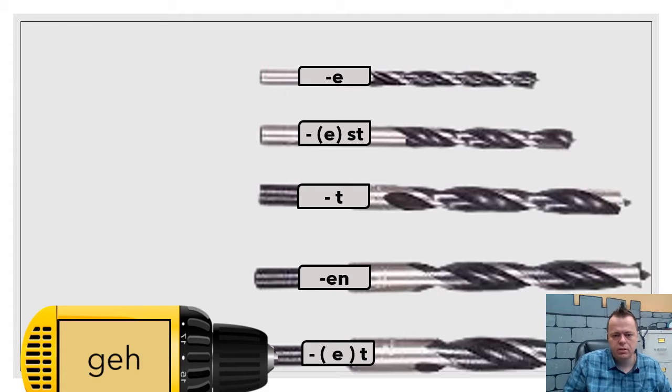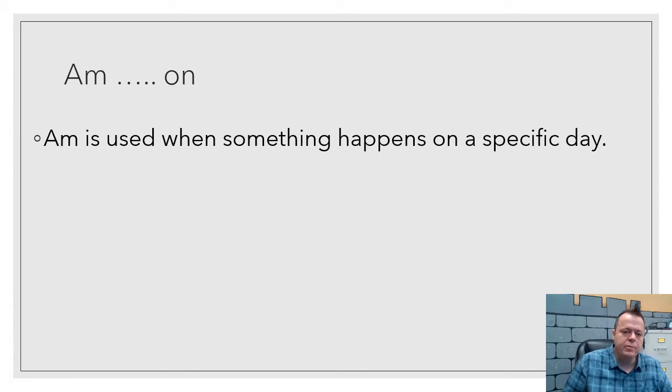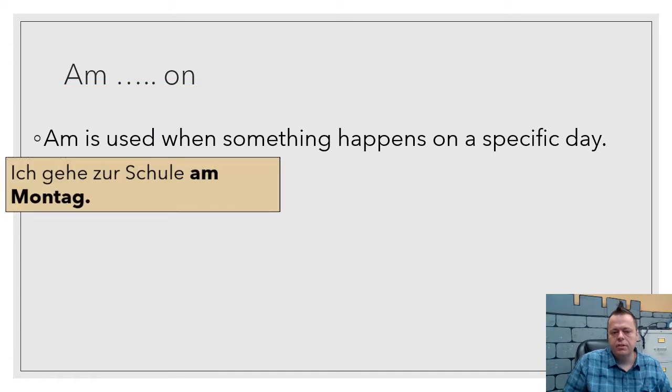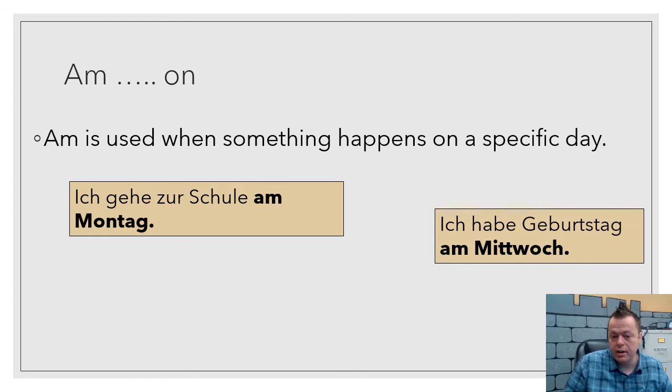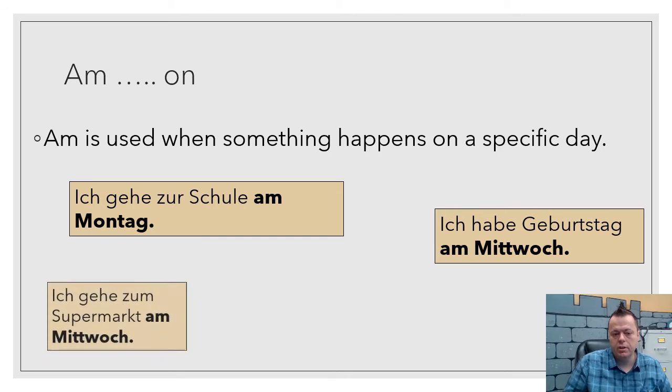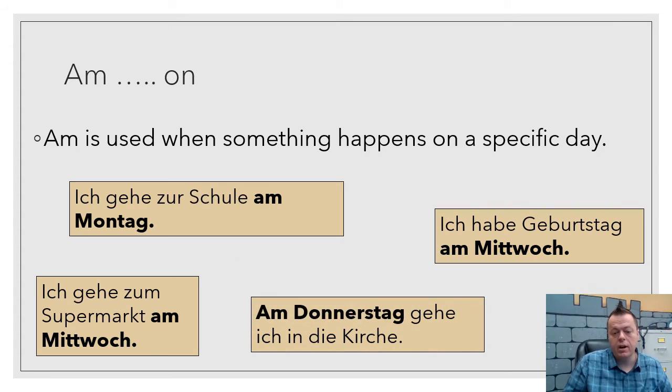Alright, we're going to talk about am, bis, and um. So am is used when something happens on a specific day. For example, ich gehe zur Schule am Montag, on Monday. You could also say ich habe Geburtstag am Mittwoch. You could also say ich gehe zum Supermarkt am Mittwoch, a little redundant but you get the idea. And then there's also am Donnerstag.